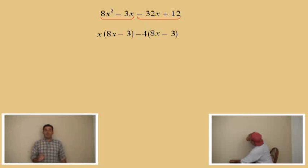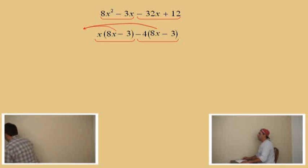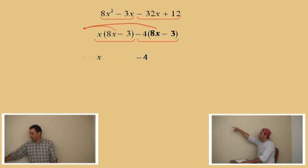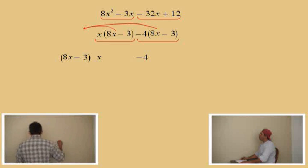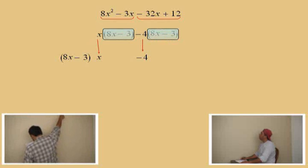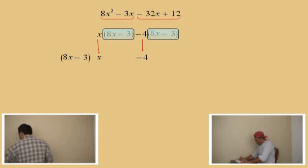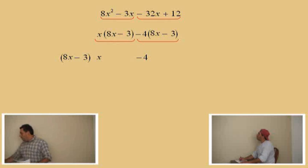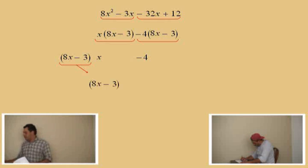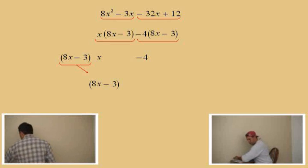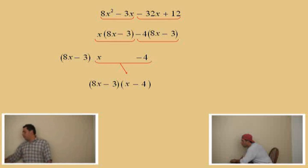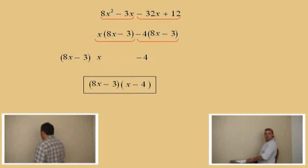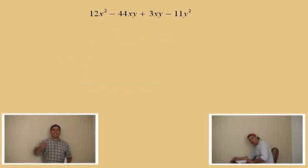Now we look at our two groups and take out that 8x minus 3 and yank it out of there. There it is in front. We shade the 8x minus 3s — notice what's left over: x minus 4. So we bring down 8x minus 3 and x minus 4 — and there is our answer. Don't forget to box your answer. And we'll move on to one more problem.